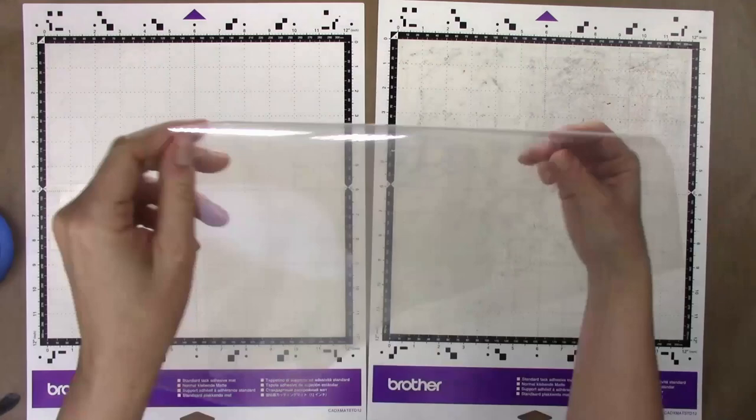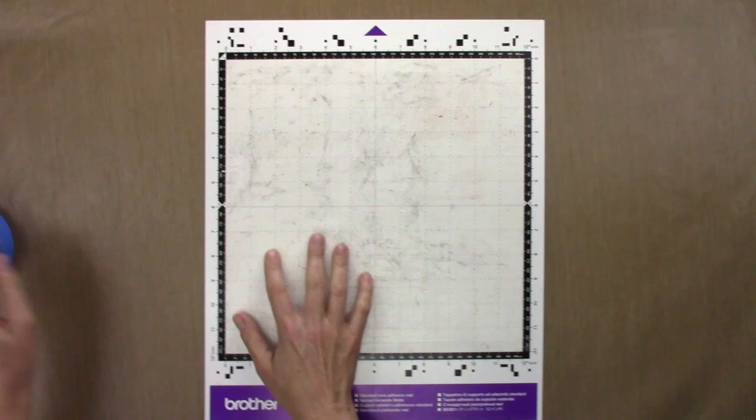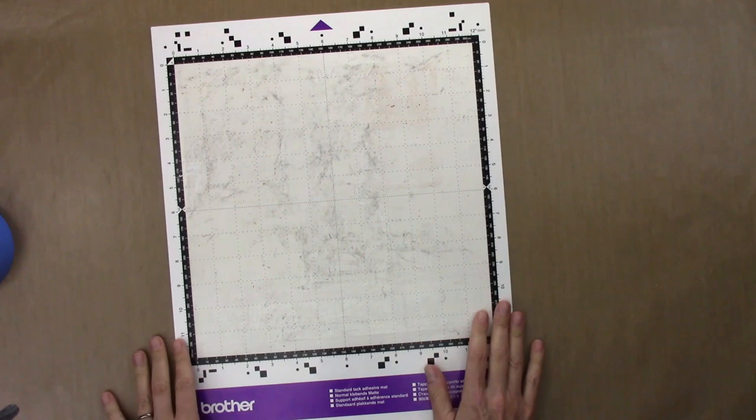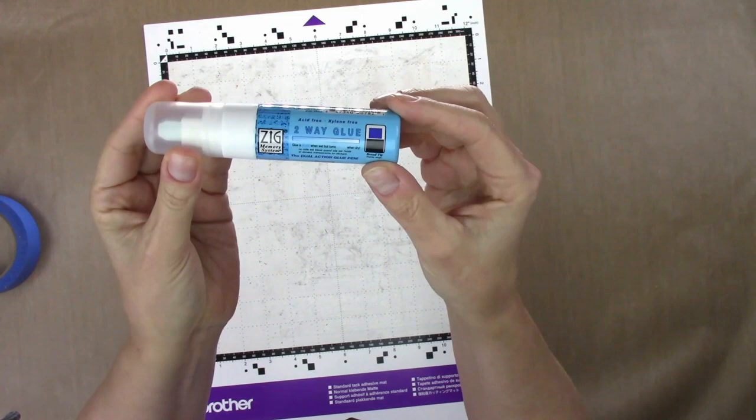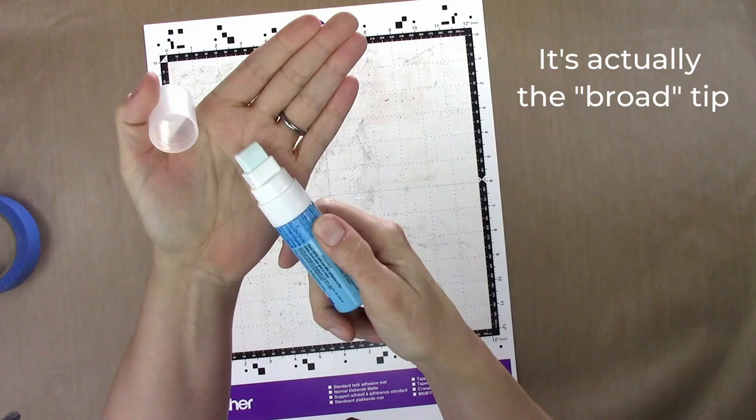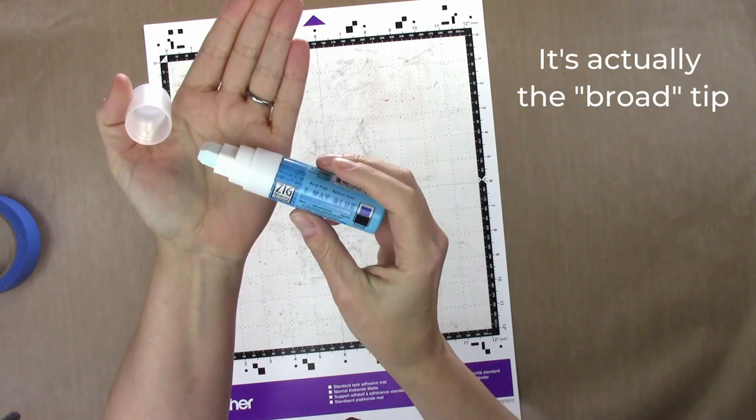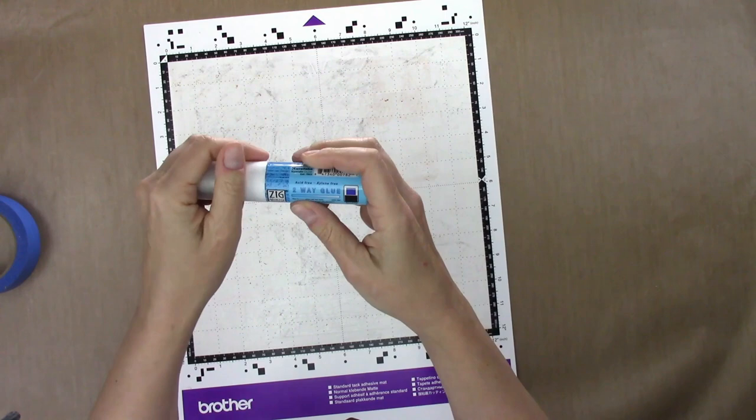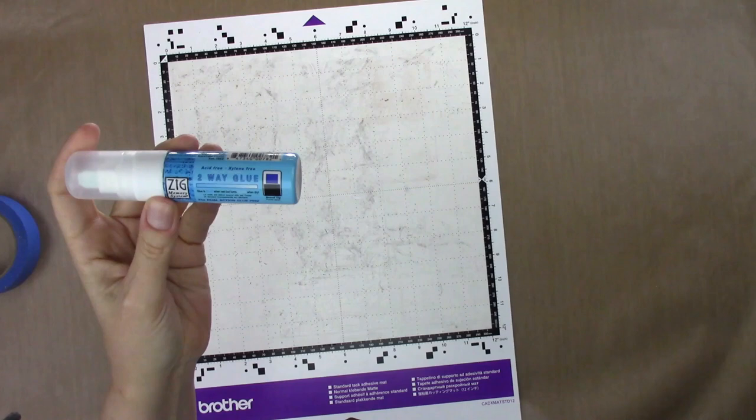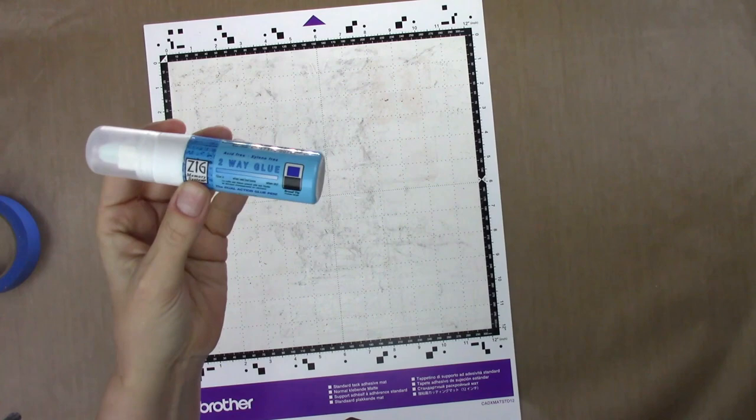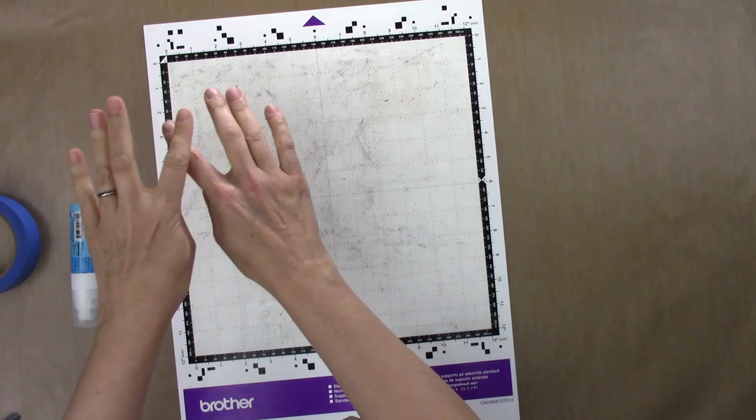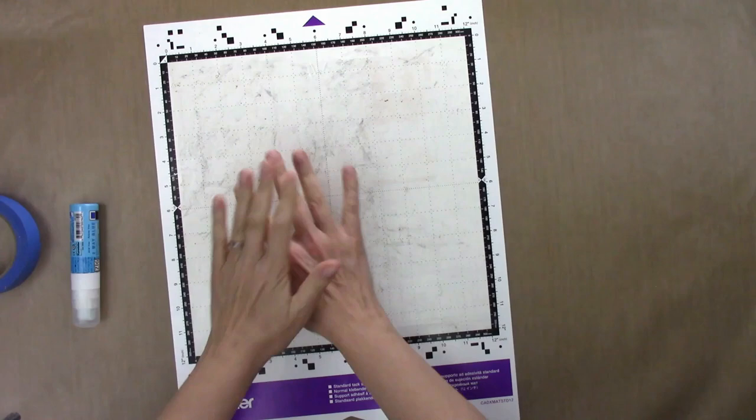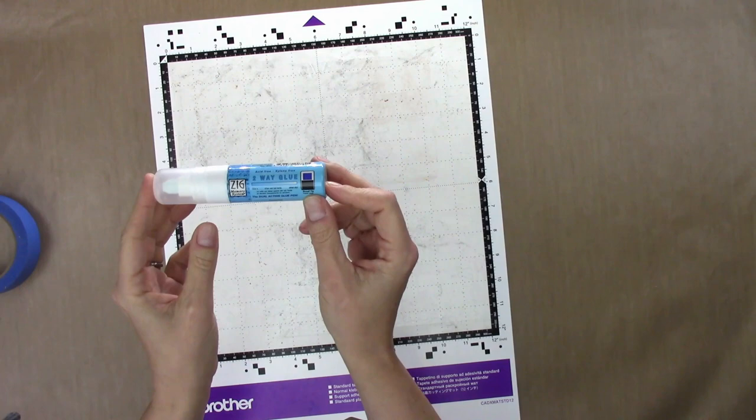The Zig two-way glue pen is the key, and it needs to be the chisel tip—the wide applicator. The thing about two-way glue pens is that when it's wet, it's a permanent adhesive, but if you let it dry, it becomes a temporary adhesive. We're going to cover the sticky part with the Zig two-way glue pen. It's blue when you first put it down, then it turns clear when it's totally dry, so it's easy to tell when it's dry. Then I can reuse the mat.